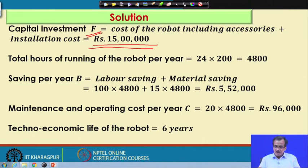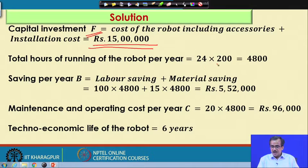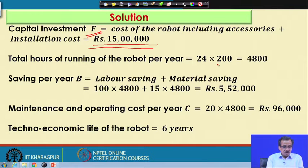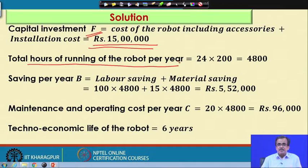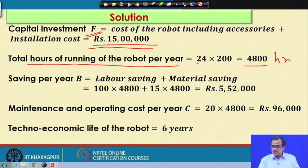Now, the shop is running 3 shifts, that means 24 hours in a day — the whole day it is running — and 200 days are the number of working days in a year. So, the total hours of running of the robot per year is nothing but 24 multiplied by 200, that is 4800 hours. So, this is the total hours of running.